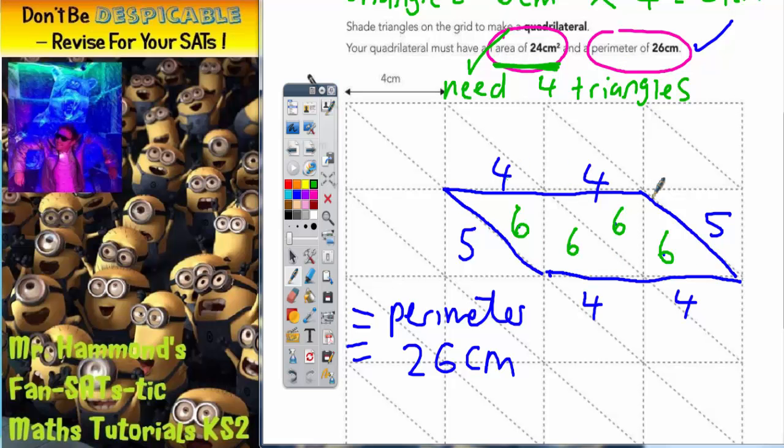And the perimeter, we've just worked it out and added it up, does indeed come to 26. So that is a valid answer for this question.